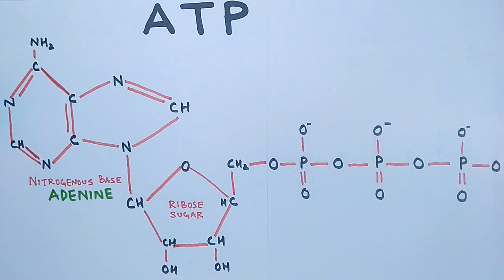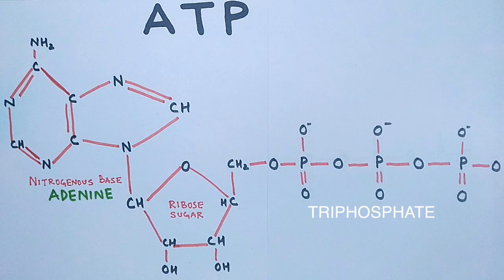The high negative charge density associated with three adjacent phosphate units of ATP also destabilizes the molecule, making it higher in energy. Hydrolysis relieves some of these electrostatic repulsions, liberating useful energy in the process.